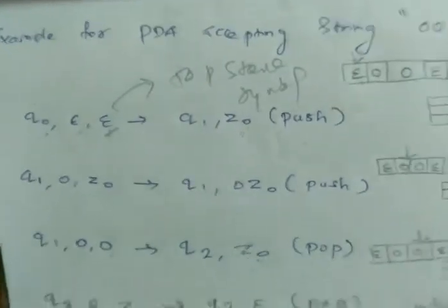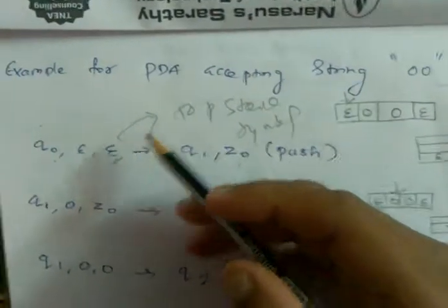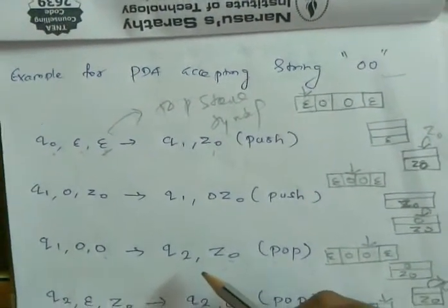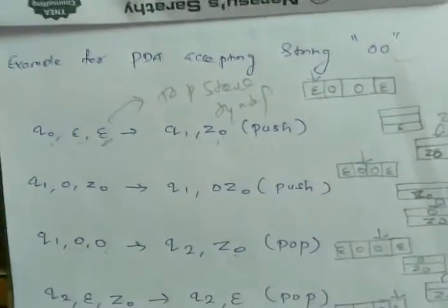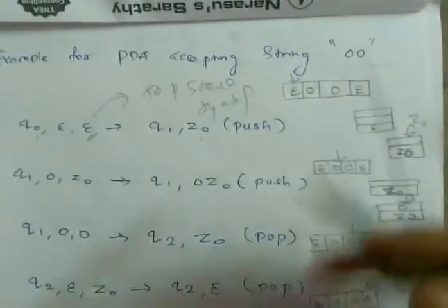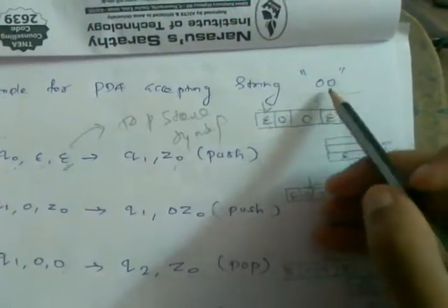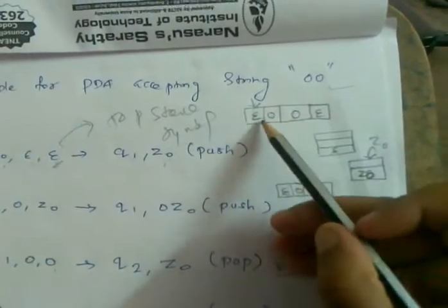Hi friends. So, example for PDA accepting string '00'. This is our PDA for '00' accept. I will add a particular tape to '00'. For example, tape: 0, 0.